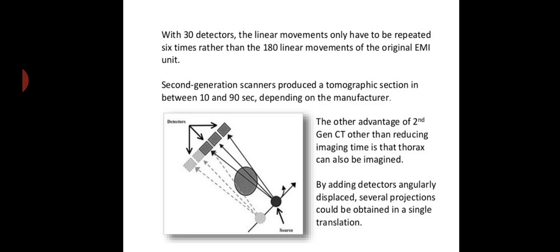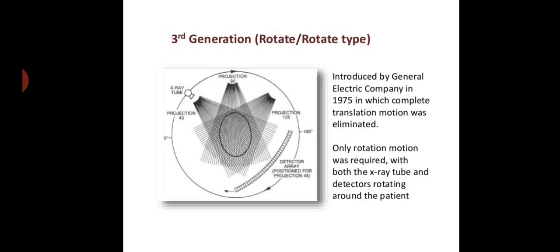The other advantage of second generation CT, other than reducing the imaging time, is that thorax can also be imaged. In first generation CT, only the brain could be imaged, but in second generation CT, thorax can also be imaged. By adding detectors angularly displaced, several projections could be obtained in single translation.